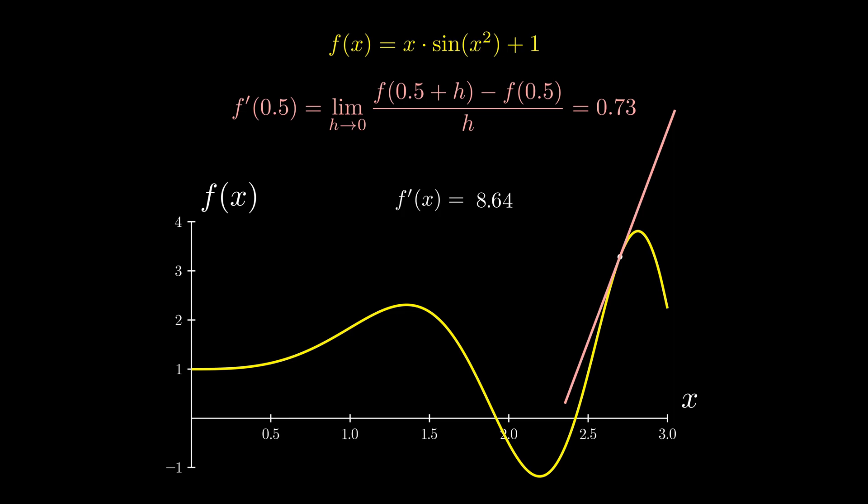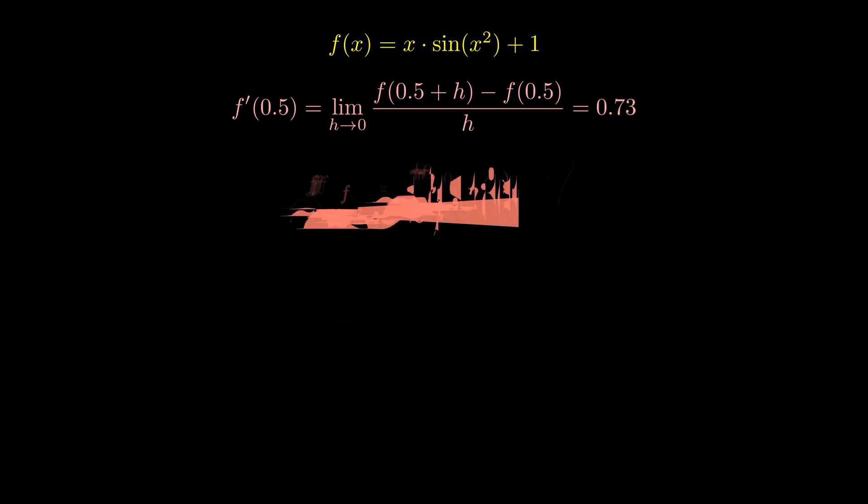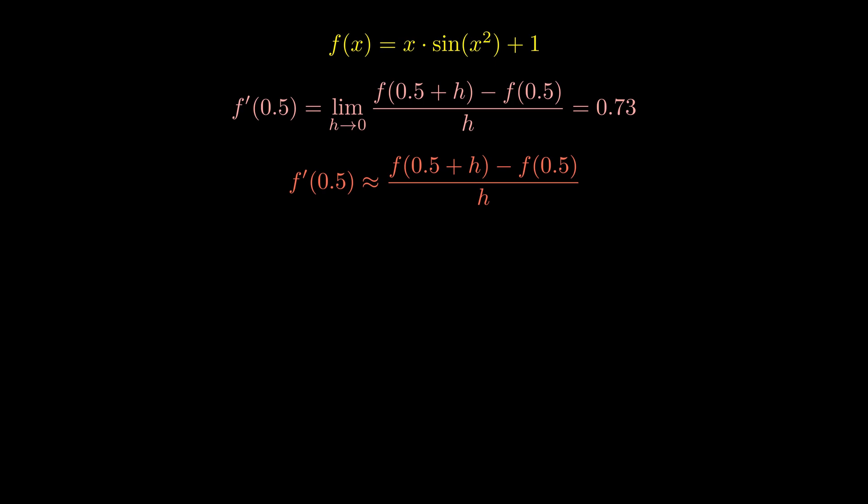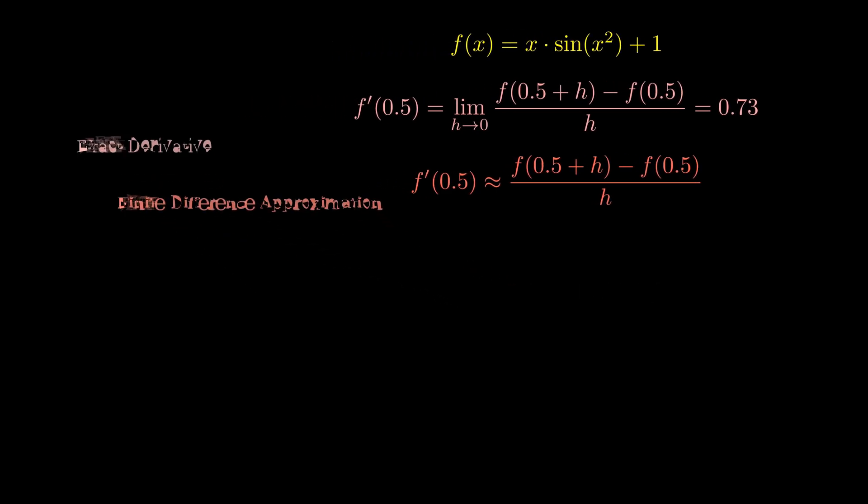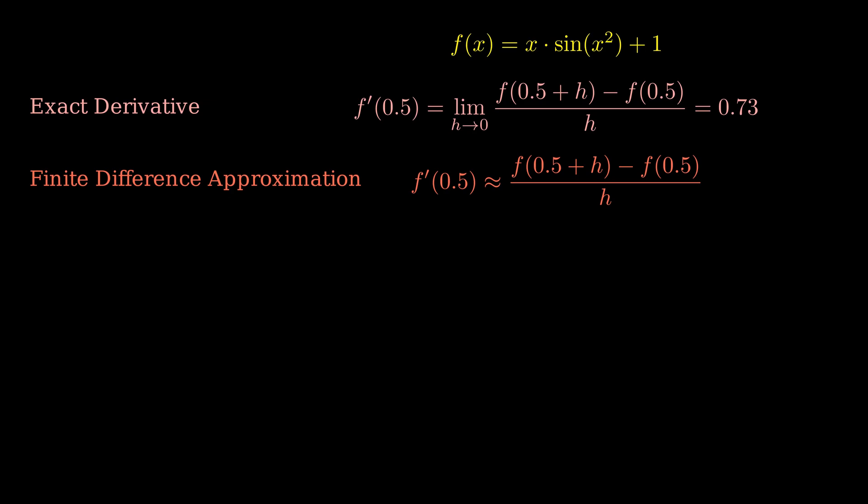Numerically speaking, taking h to 0 will blow up this ratio. However, it's reasonable if I say that this derivative can be approximated using only the ratio as long as the h value is kept really small. This is called finite difference approximation and this specific case is first order accurate in h.